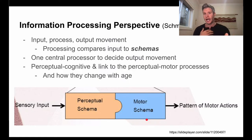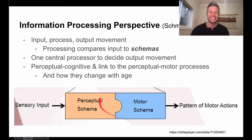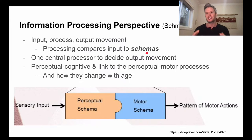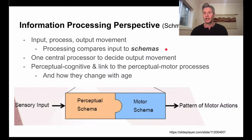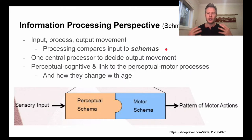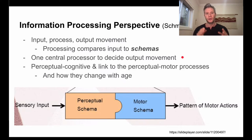That perceptual schema in turn creates a motor plan or schema, which produces an action — like trying to dodge the ball flying toward your face. So we have input, we process it, and we get output movement. Those plans are called schemas — pre-programmed frameworks in our brain. If you've taken introductory psychology, you've likely encountered cognitive schemas, which form the basis of our biases, judgments, and frameworks for how we view the world.